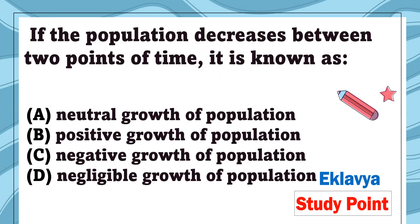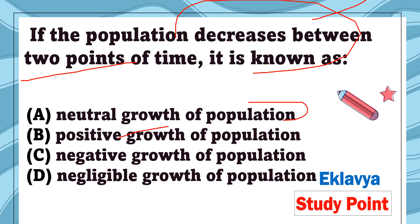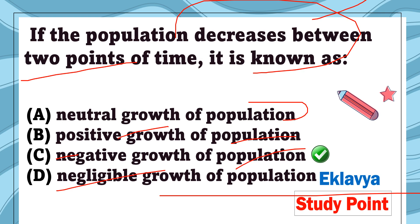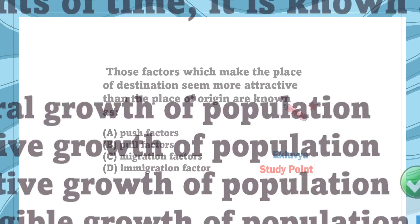Question 5: If the population decreases between two points of time, it is known as — option A: neutral growth of population, option B: positive growth of population, option C: negative growth of population, option D: negligible growth of population. The correct answer is negative growth of population, because if the population is decreasing between two points of time, we call it negative growth of population.